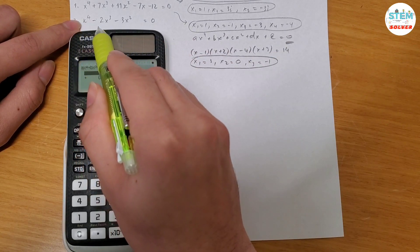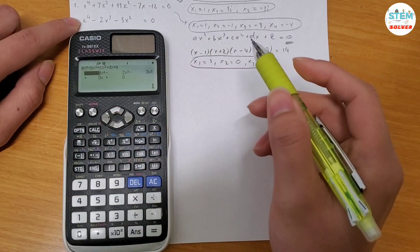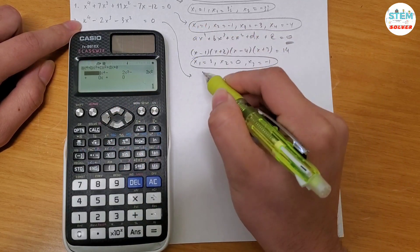Well, in this case, as you can see, you have x to the fourth, minus x cubed, minus 3x squared. So literally, from this step, you can factor out x squared, right?